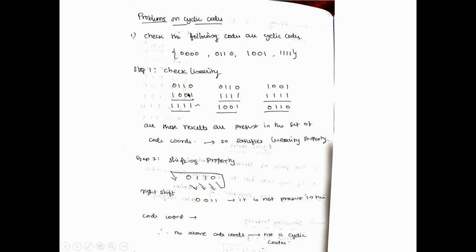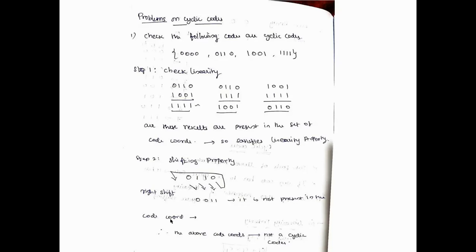Now the second step is the shifting property. We neglect 0000 since shifting zeros always gives the same value. We take the second value 0110 and shift it one position to the right. The zero moves to the front, giving the output 0011. This result 0011 is not in the given set of codes.